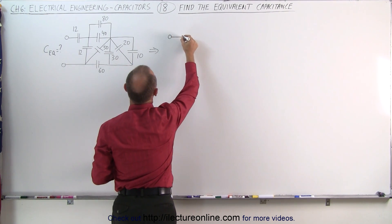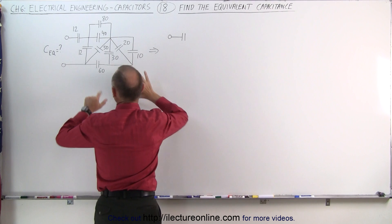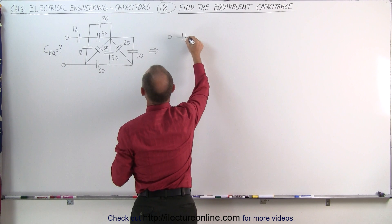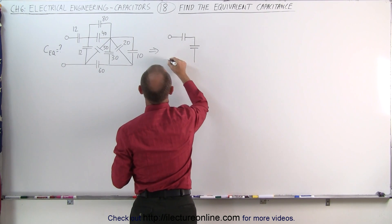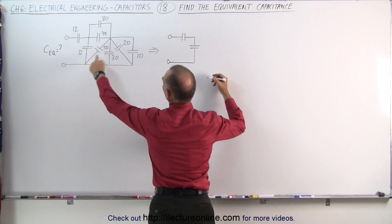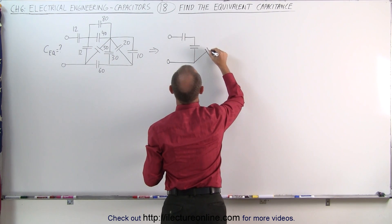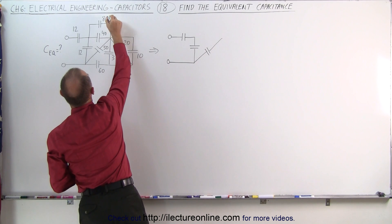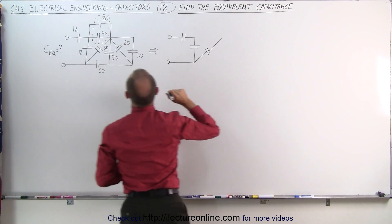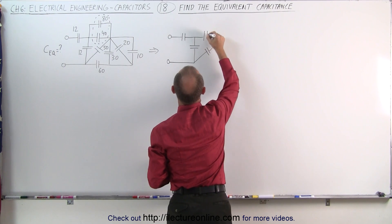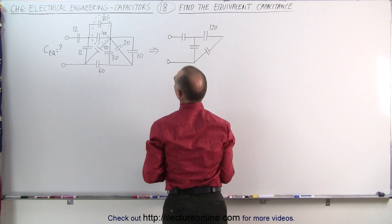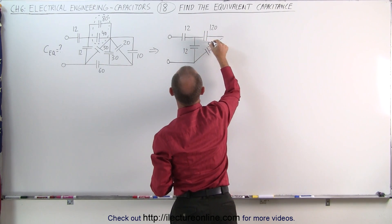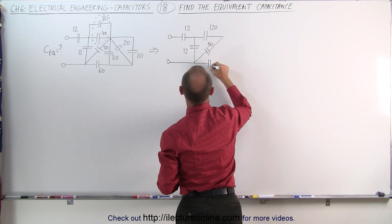Starting out, we still have our 12 microfarad capacitor, assuming that these are all in microfarads. We're going to leave this one alone, and this one alone for now. These two combined, since they're in parallel, we simply add them. We combine those two together — that becomes a single 120 microfarad capacitor. This is still 12, this is still 12, this is still 50, and we still have a 60 microfarad capacitor here.